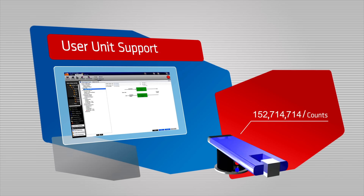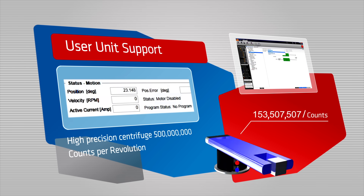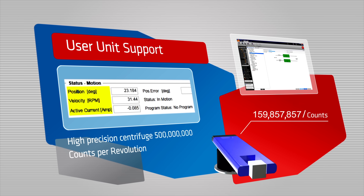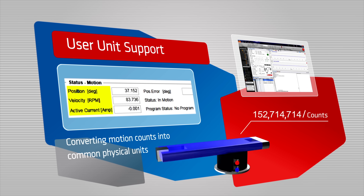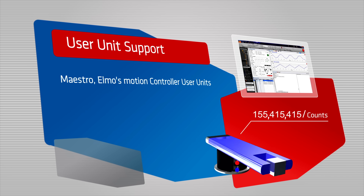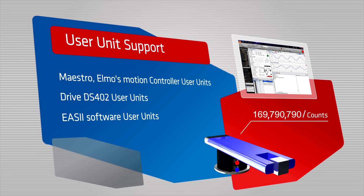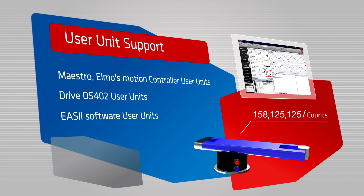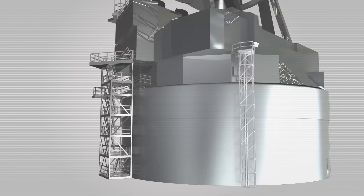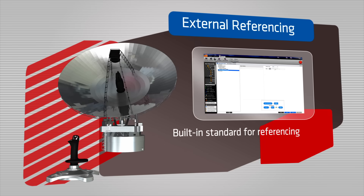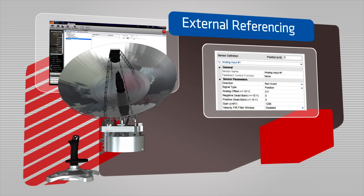EASE-2 performs any units conversion for you. It converts motion counts into common physical user units such as degrees, RPM, radians, millimeters, inches and more. It is supported in three levels of user unit conversions: at the maestro, ELMO's motion controller, drive DS-402, and EASE-2 level.